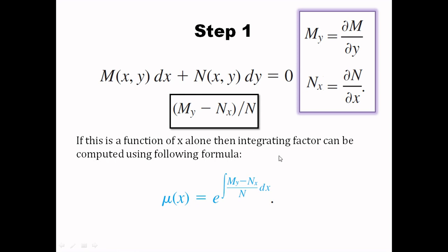As you know, when dealing with linear differential equations we find an integrating factor and multiply it with the differential equation. Here also, to make a non-exact differential equation exact, we need to find an integrating factor, but the procedure is a little different. If the function (My minus Nx) over N comes out to be a function of x alone, we apply this formula: the integrating factor is e raised to the integral of (My minus Nx) over N.